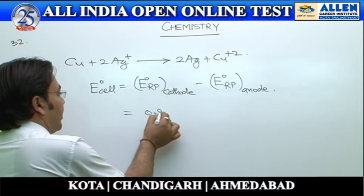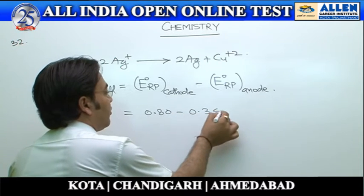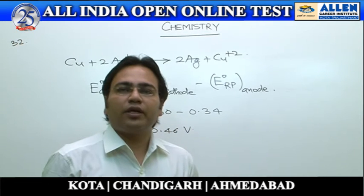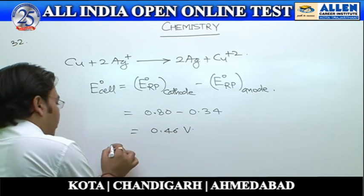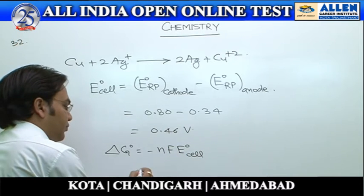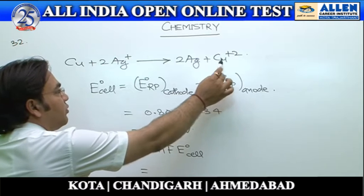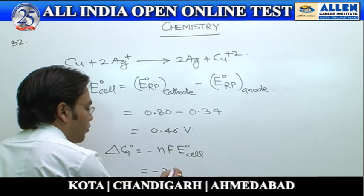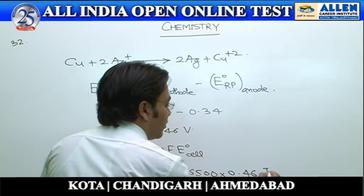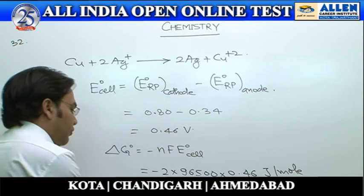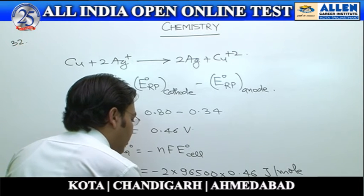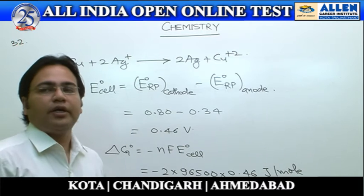E°cell = E°RP(cathode) − E°RP(anode) = 0.80 − 0.34 = 0.46 V. Now using the formula ΔG° = −nFE°cell, where n = 2 (copper converts to Cu²⁺), F = 96500, and E°cell = 0.46 V. After solving and converting to kilojoules, the value becomes approximately −89 kJ/mol. Hence the correct option is 4.